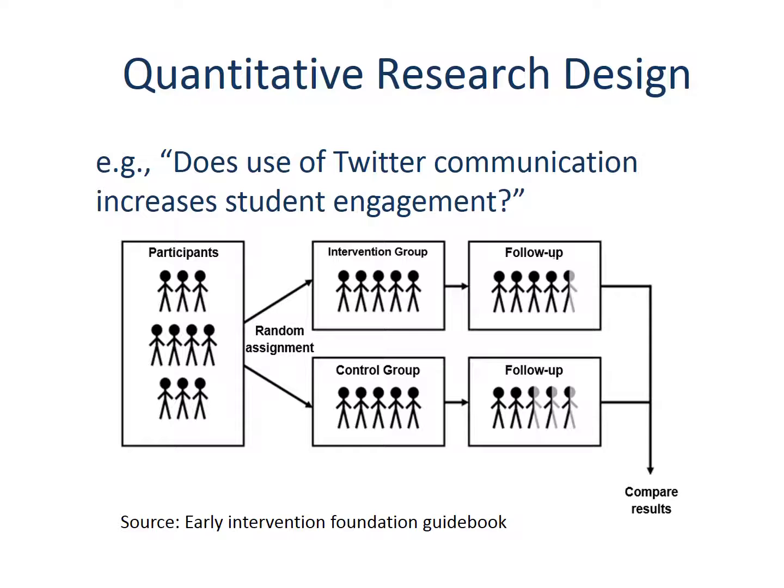So what if you want to study whether the use of Twitter communication increases student engagement? Let's say you will teach an introduction to higher education course for 40 students. You can randomly assign students to intervention and control groups. Before the semester starts, you will measure students' engagement level using a test. Then the intervention kicks in: for only the intervention group, you will ask them to make 10 tweets per week on the given session's topic. For the control group, you will not require anything beyond normal class assignments. Seven weeks later, you will measure their engagement level and compare changes between the treatment and control groups.